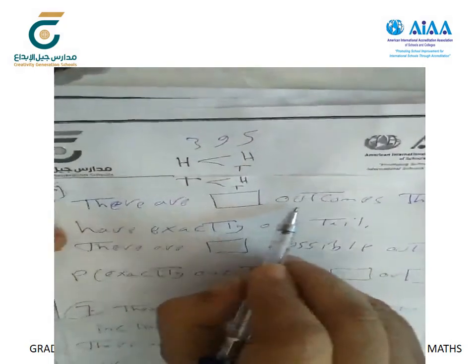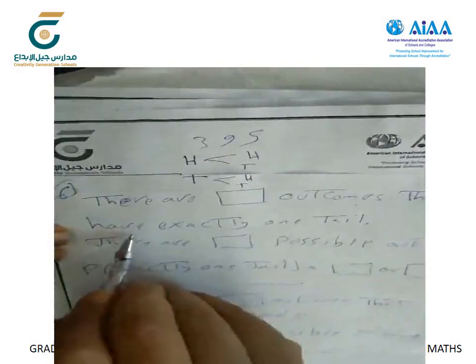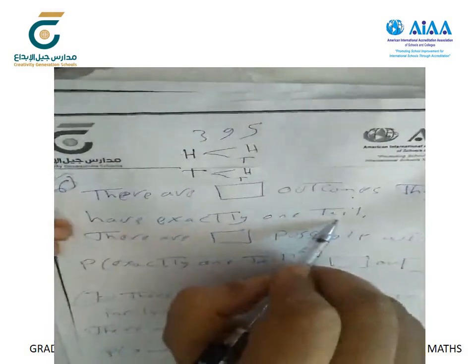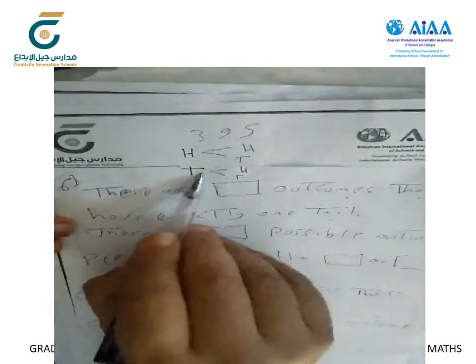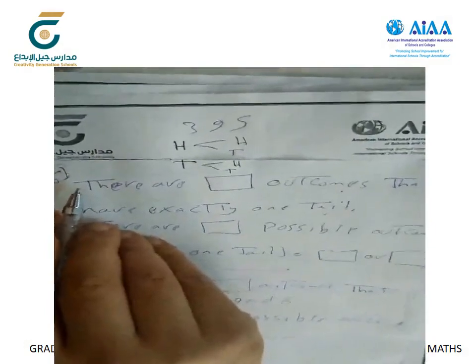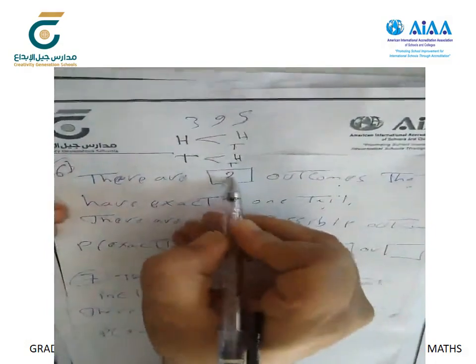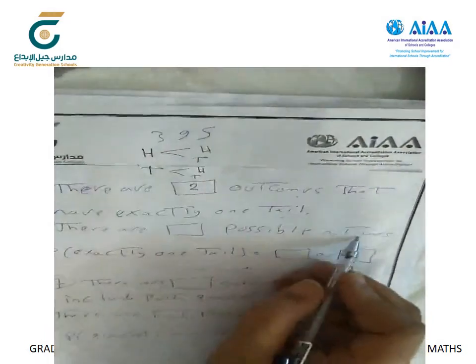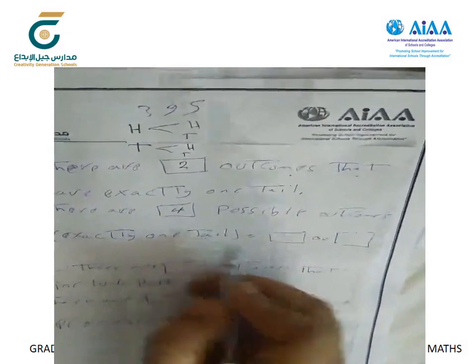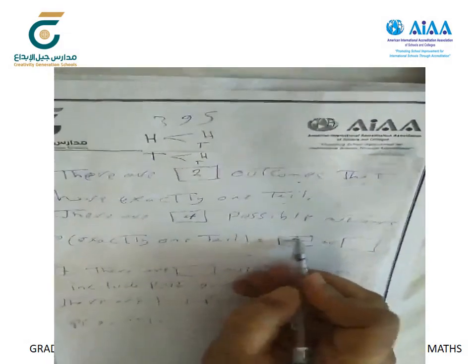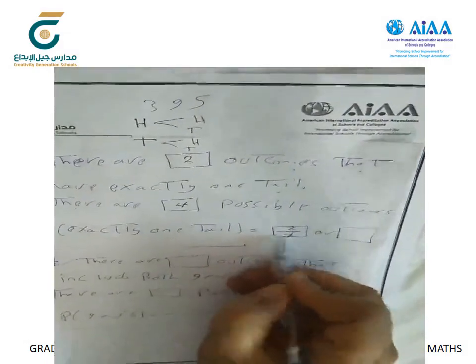Just one tail: heads-tails and tails-heads — two outcomes. The total number of possible outcomes equals four. So the probability of getting exactly one tail is 2/4, or one-half, which equals 50%.